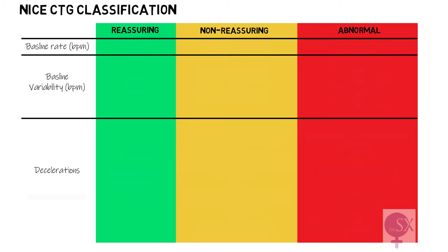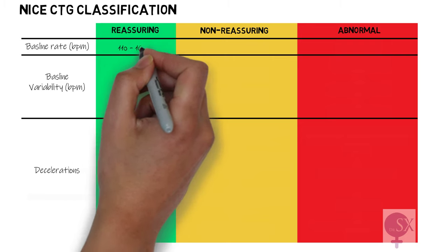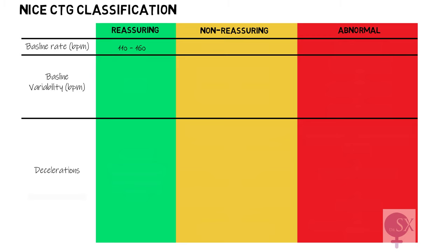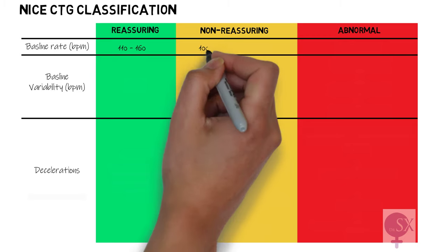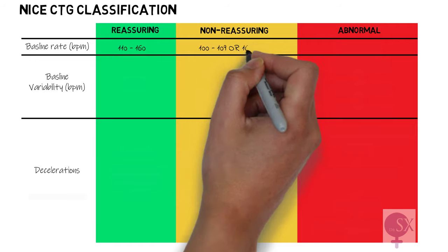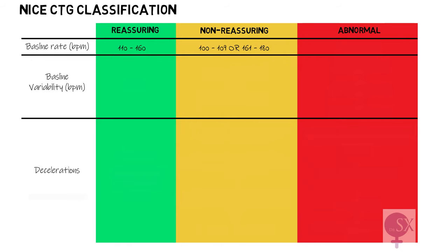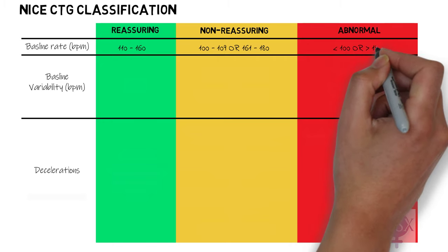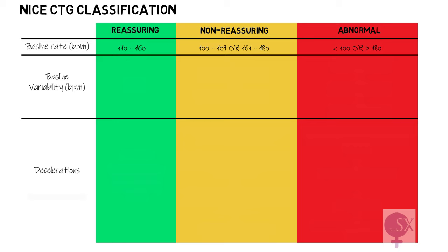Starting with the baseline rate: it is normal and reassuring if it is between 110 to 160 beats per minute. Non-reassuring if at 100 to 109 beats per minute or 161 to 180 beats per minute, and abnormal if the baseline rate is less than 100 or more than 180.